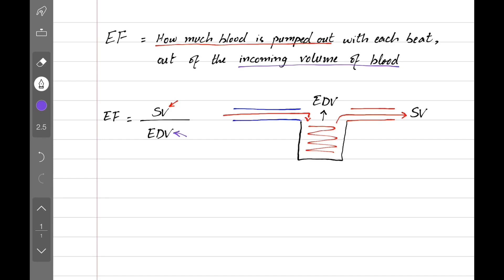Let's say end diastolic volume is 100 and stroke volume is 60. 60 by 100 equals 0.6. We multiply it by 100 to get the answer in percentage because percentage makes more sense.